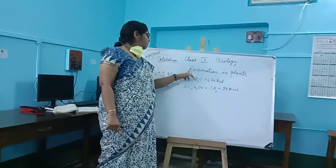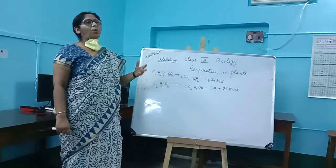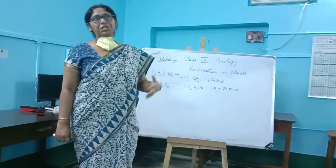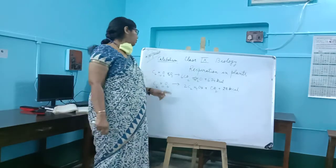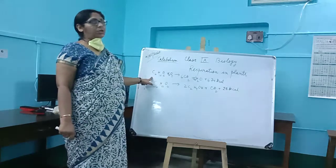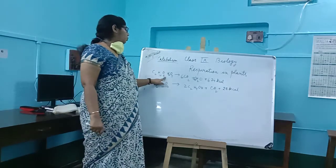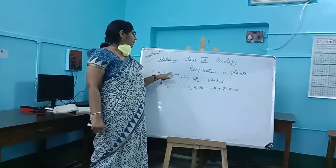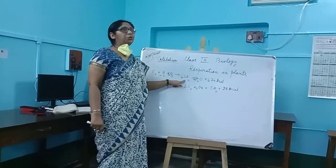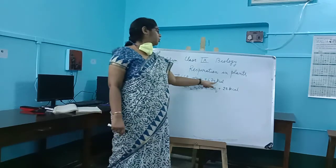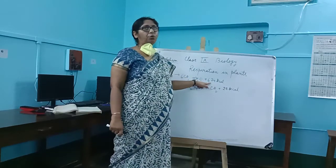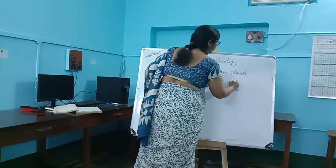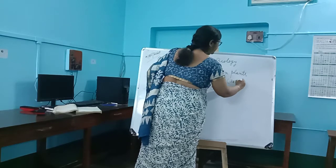After the definition we have to go to the overall equation. They quite often give this question: define respiration and give the overall equation of respiration. The overall equation is: C6H12O6 (glucose), in the presence of oxygen, is converted to CO2 and H2O, producing 674 kilocalories of energy, which is equal to 38 ATP.